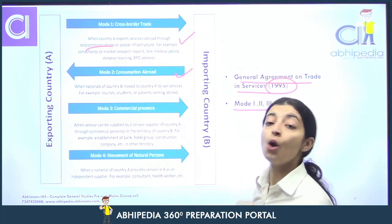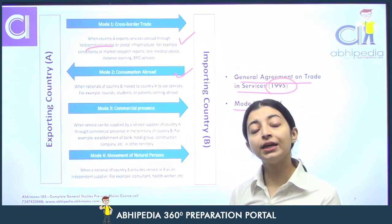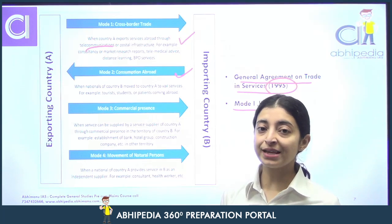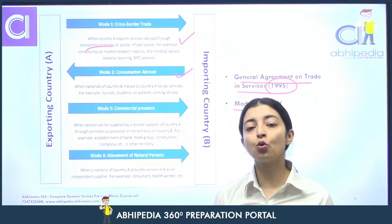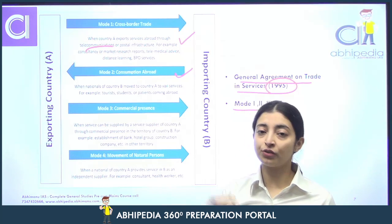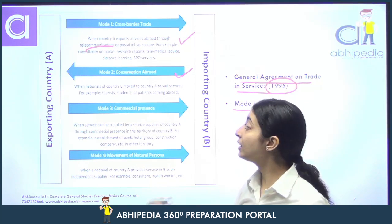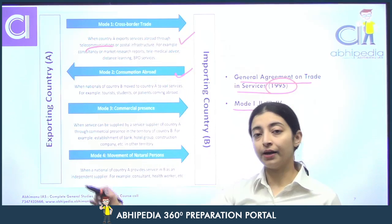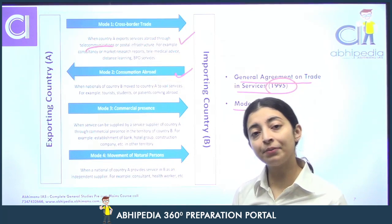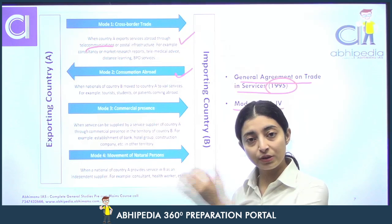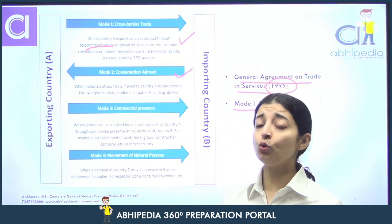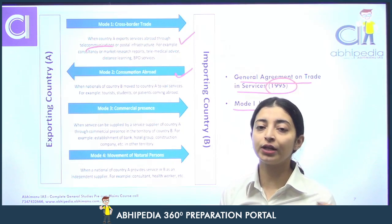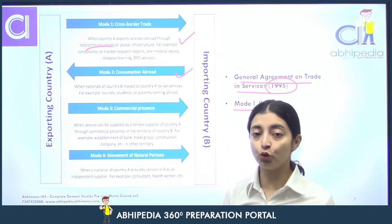Ab baat karte hain Mode 2 ki. Mode 2 mein kya hai? Consumption abroad. Service ko consume karne ke liye jab abroad gaye, that is mode 2. Same example lete hain — US mein jo doctor tha, ab patient flew to US to take the treatment. Toh ye mode 2 ke under hoi hai ki jo patient tha, wo doctor ki services consume karne ke liye bahar gaya — US mein gaya. That is consumption abroad. Iska ek aur example kya hai? Tourism. Tourism mein kya karte hain hum? We go to a separate nation, services consume karne ke liye temporary movement hoti hai — shopping karne, rehte hain, and we come back. So that is called consumption abroad — trade under mode 2 under GATS.